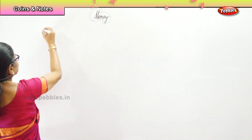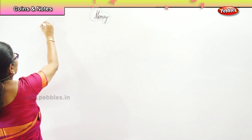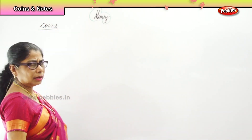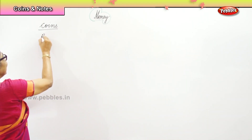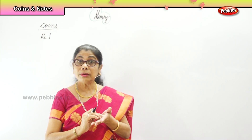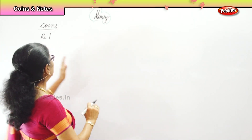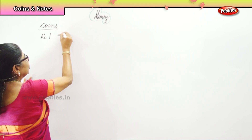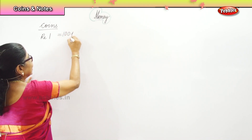Indian money has coins. We have coins, and we get one rupee. One rupee is a tiny little coin. How many paisa in one rupee? There are hundred paisa. So one rupee is equal to hundred paisa.